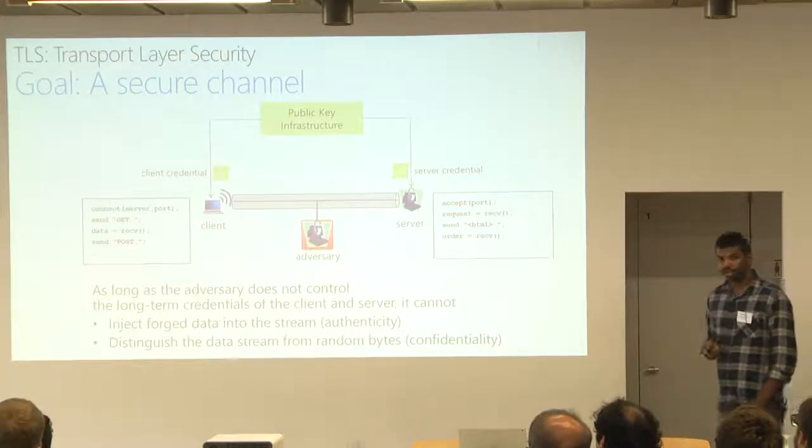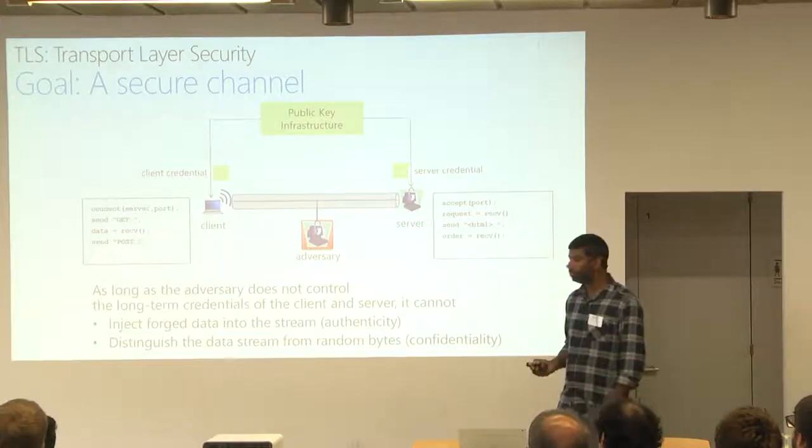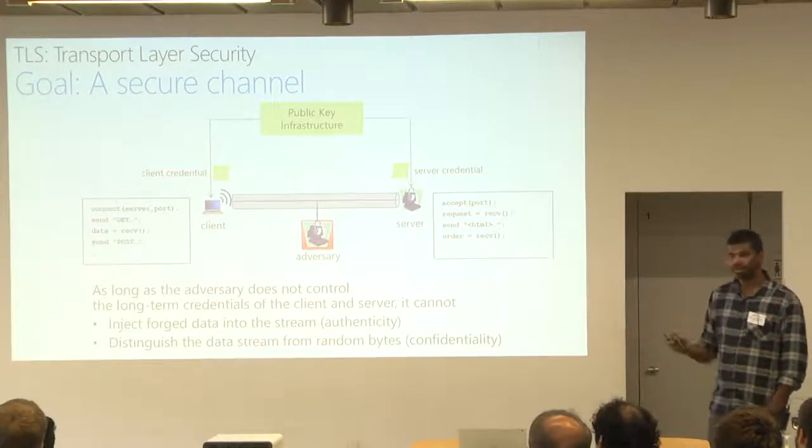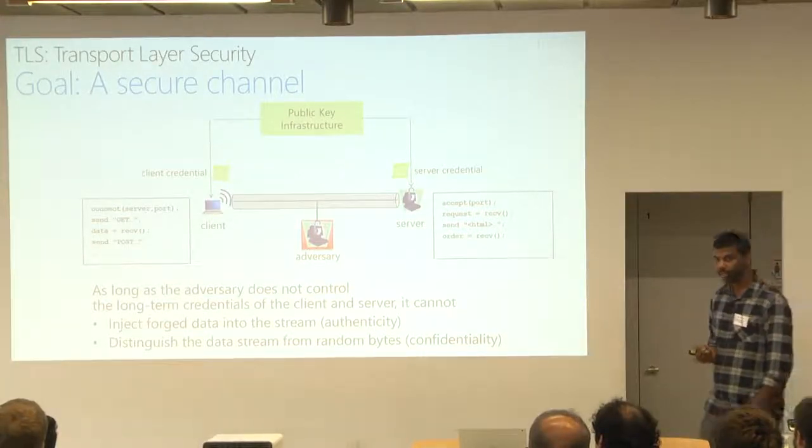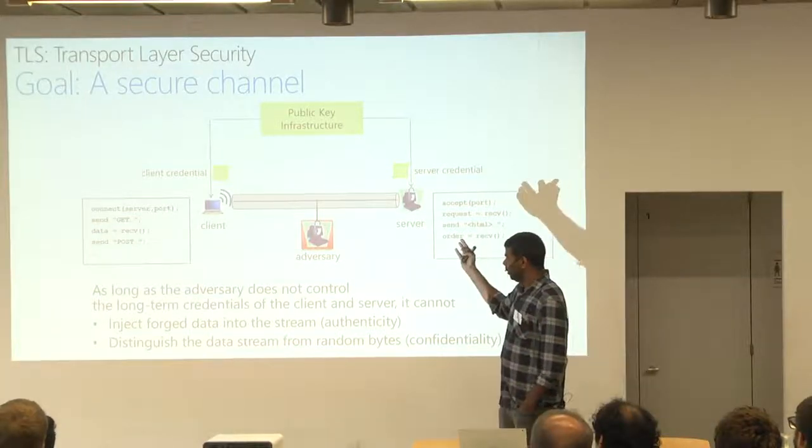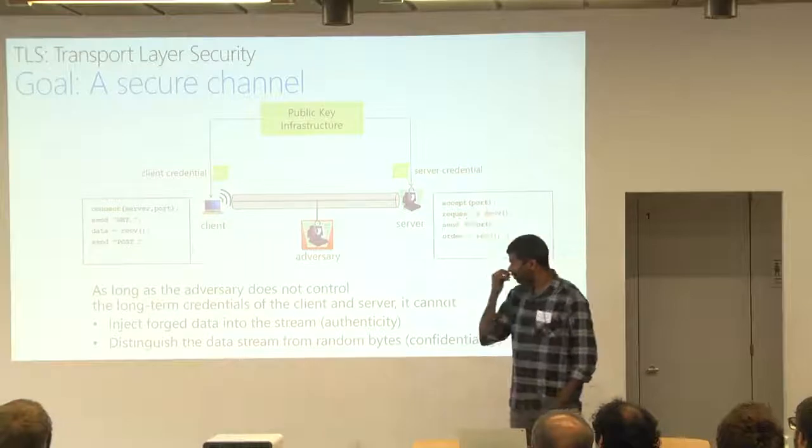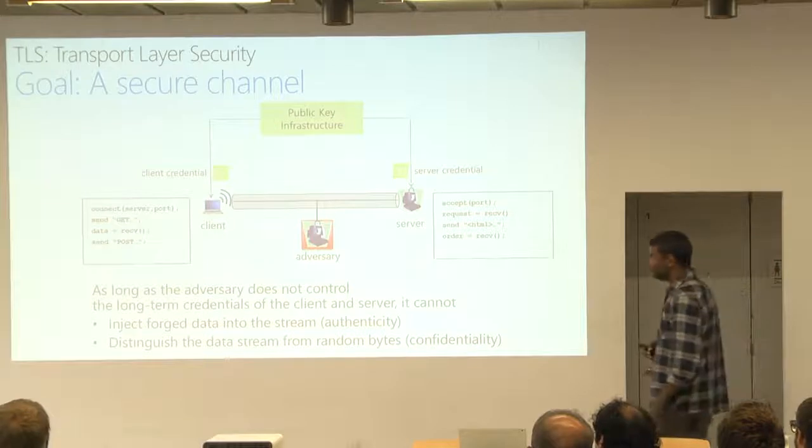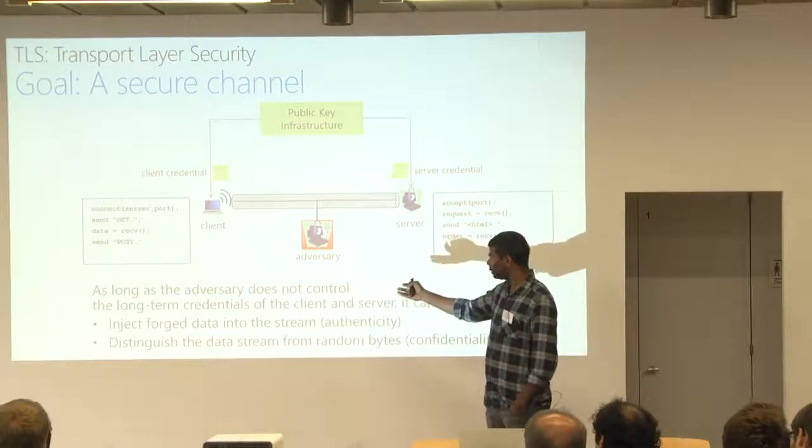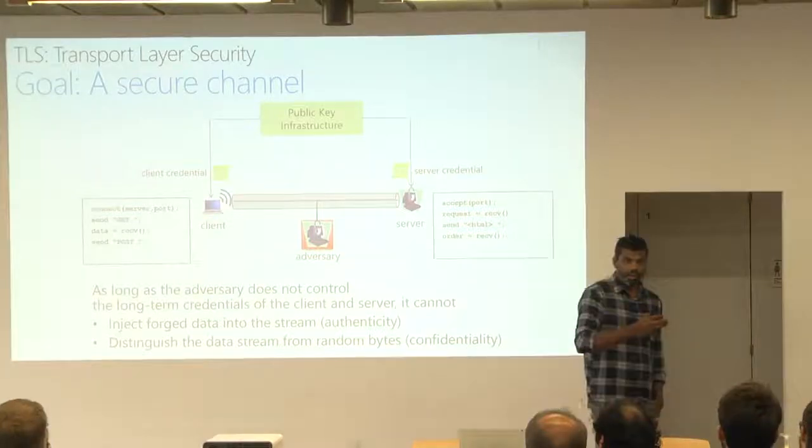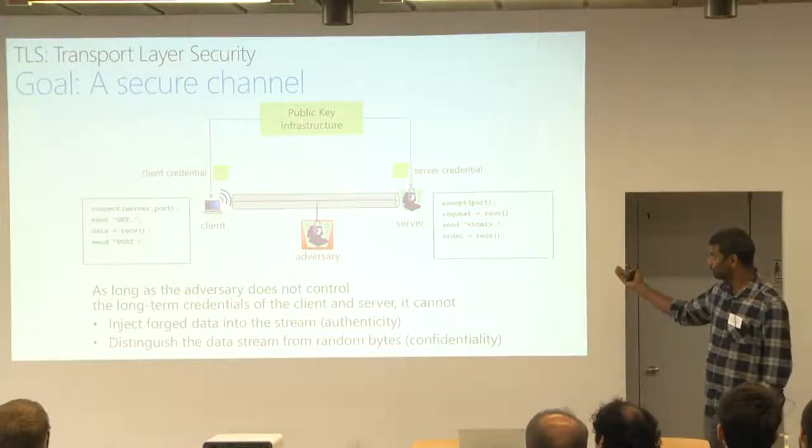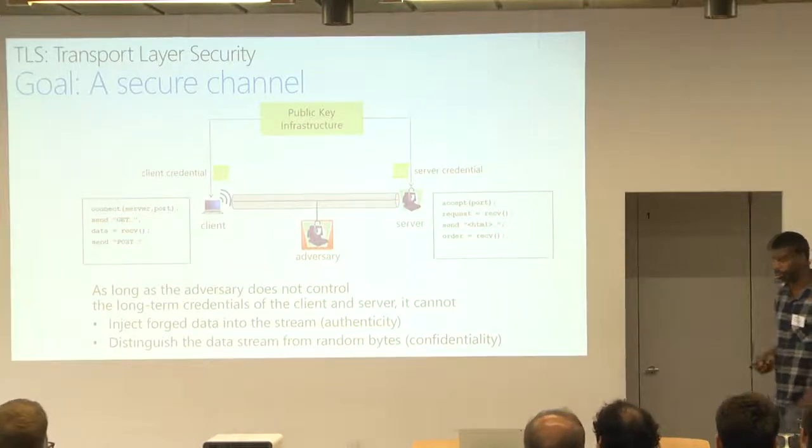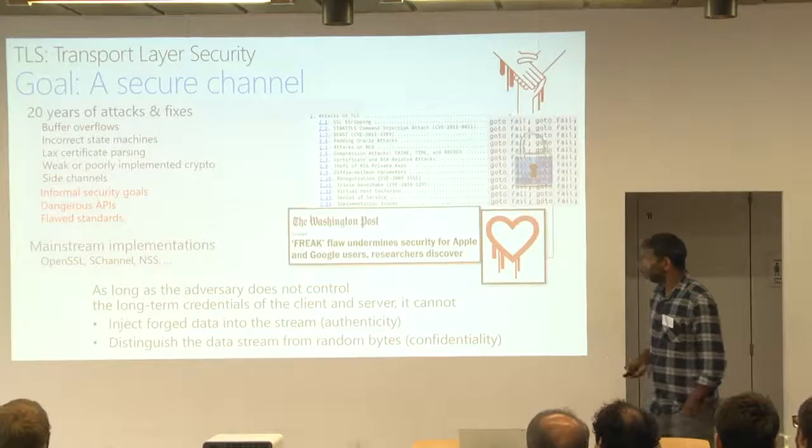Now, TLS, what it's designed to do is it's meant to build a secure channel between two endpoints, a client and a server. And a secure channel is meant to give you both authenticity and confidentiality. Meaning that if a server receives a message, even in the presence of a network adversary, the server can conclude that the message came from the client, that's authenticity. And confidentiality means that the adversary cannot distinguish between a communication between a client and a server and a random stream of bytes, except with negligible probability.